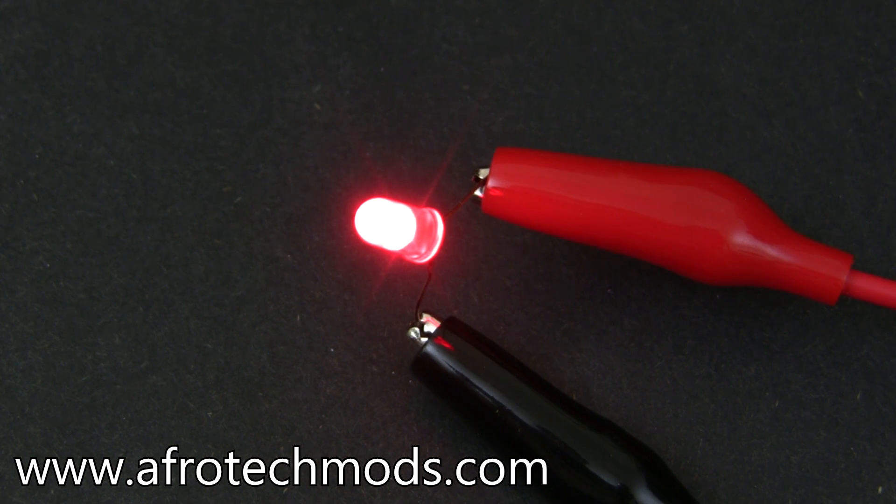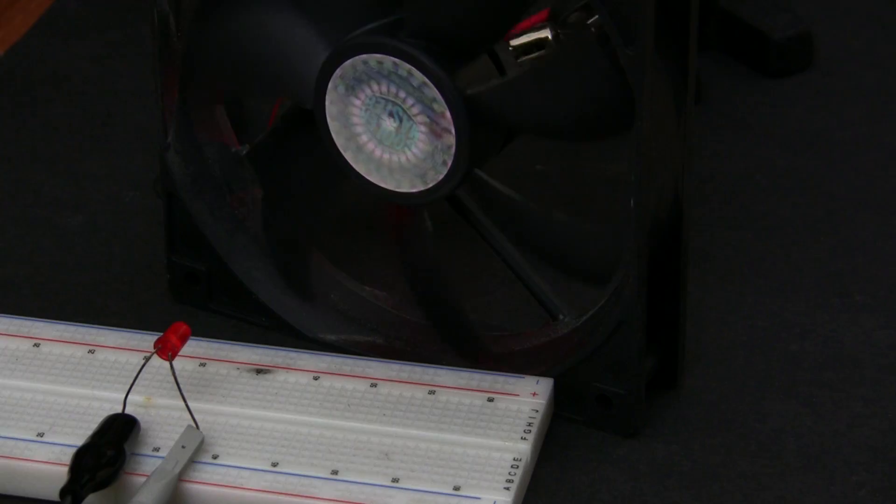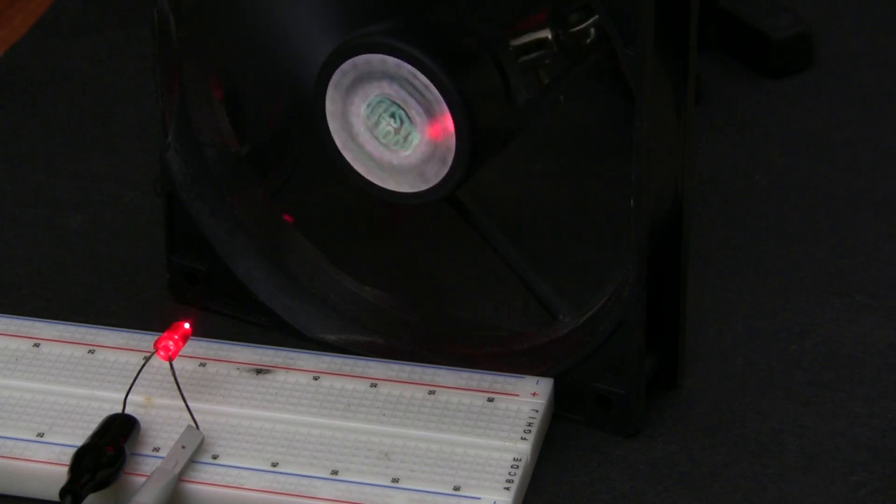Everyone knows LEDs emit light, but did you know you can actually use an LED to sense light? In this video I'm going to use this trick and show you how to build a laser tachometer circuit. You can use this technique to measure the RPM of any rotating mechanical device.